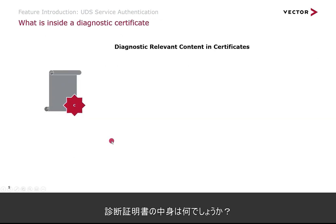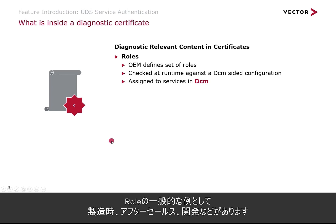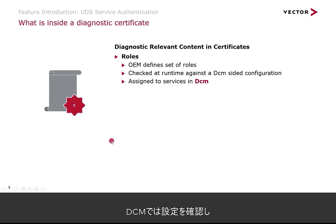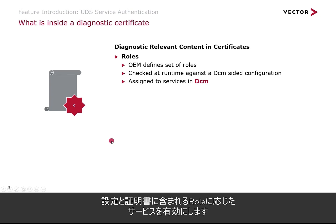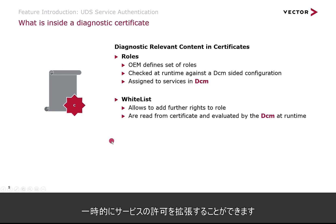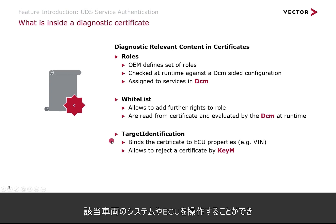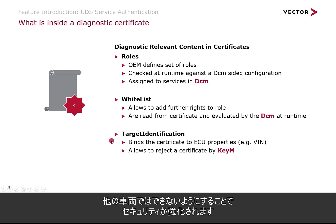So what is inside a diagnostic certificate? The diagnostic-relevant content is roles — an OEM-defined set of roles; typical examples are production, after sales, development, and so on. The DCM checks these against the DCM-side configuration, and services are assigned to some of those roles. Another diagnostic-relevant aspect is whitelists: in a whitelist, you can extend the services allowed in a certain role by further services that are written into and part of the certificate. And the last element is target identification — a certificate can be really limited to a certain vehicle identification number, so you can ensure a person can access the system or ECU, but only on that vehicle, not on other vehicles, providing increased security.